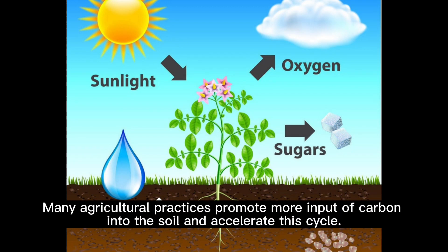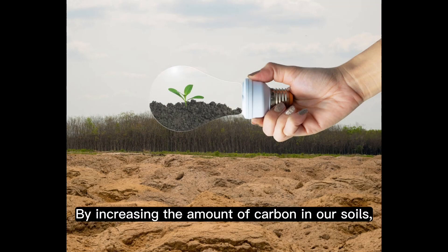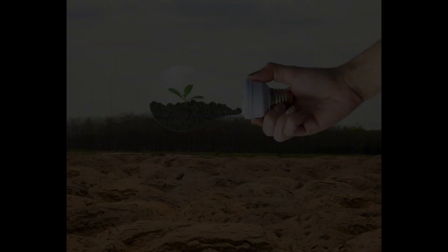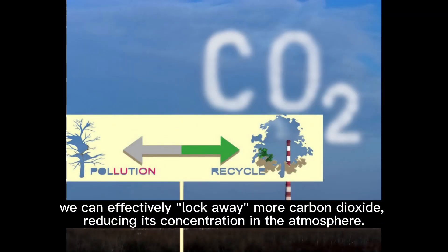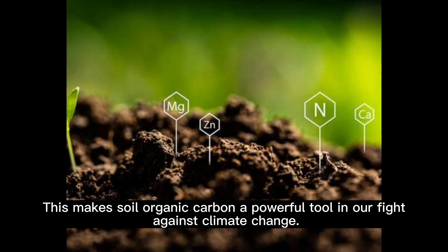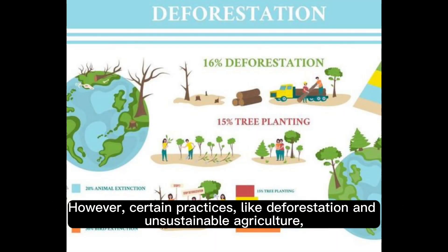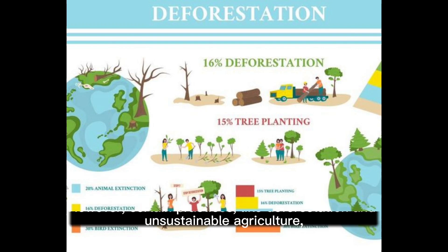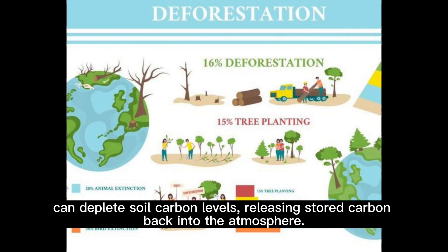Many agricultural practices promote more input of carbon into the soil and accelerate this cycle. By increasing the amount of carbon in our soils, we can effectively lock away more carbon dioxide, reducing its concentration in the atmosphere. This makes soil organic carbon a powerful tool in our fight against climate change. However, certain practices, like deforestation and unsustainable agriculture, can deplete soil carbon levels, releasing stored carbon back into the atmosphere.